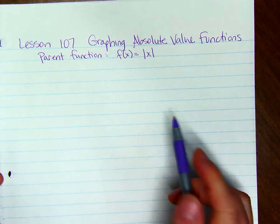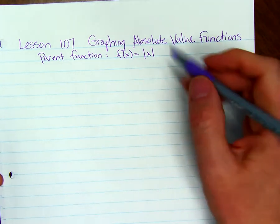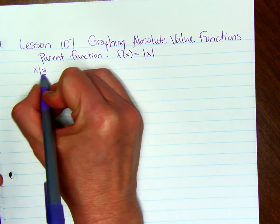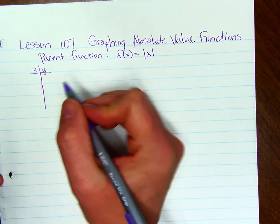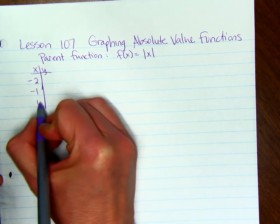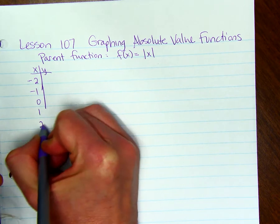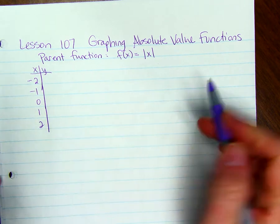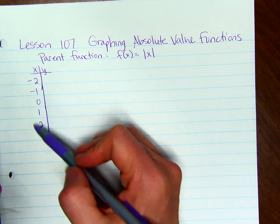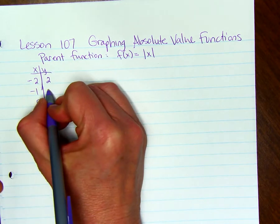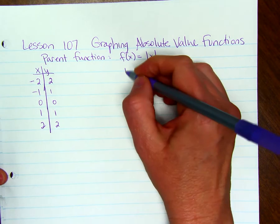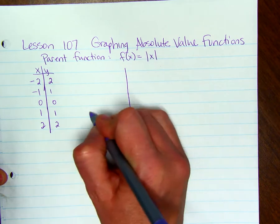If we want to graph this and we pick numbers for x — negative 2, negative 1, 0, 1, and 2 — then we figure out what y is by finding the absolute value of each of these numbers. So y will be 2, 1, 0, 1, 2.